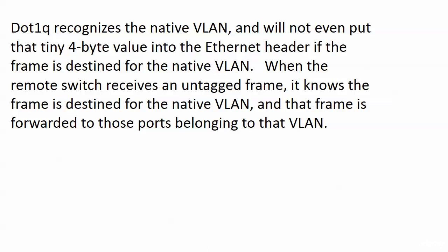About 802.1Q recognizing the native VLAN — when 802.1Q sees that a frame is destined for the native VLAN, and the two switches need to agree on what the native VLAN number is, then 802.1Q won't even put that four-byte value into the Ethernet header. It's just going to send the frame totally untagged. When the remote switch receives an untagged frame, it knows the frame is destined for the native VLAN and forwards it accordingly. That's why the switches have to agree on the native VLAN, because otherwise that wouldn't work.